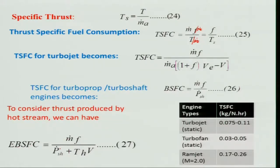The T_h stands for hot-jet thrust, and V is included since the propeller produces thrust accounted by P_sh, while the jet produces T_h. So EBSFC is used for turbo-prop engines. Now we have looked at various performance parameters — these help us evaluate how good an engine is and under what conditions it performs.